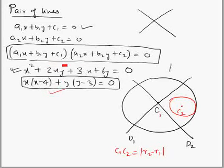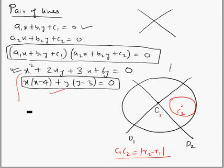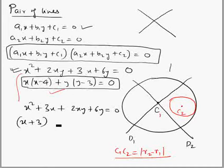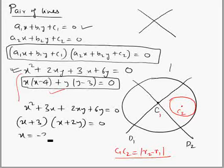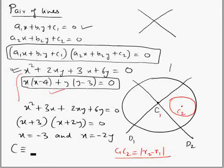Now let's factorize this equation. We'll factorize it using the split-the-middle-term method: x² + 3x + 2xy + 6y = 0. One factor is (x + 3) and the other is (x + 2y) = 0. So x = −3 and x = −2y are the two diameters. Solving them simultaneously, the center has x-coordinate −3, and replacing x = −3, the y-coordinate is 3/2. So the center is (−3, 3/2).